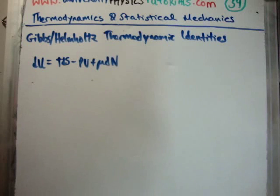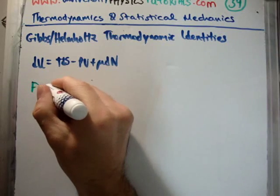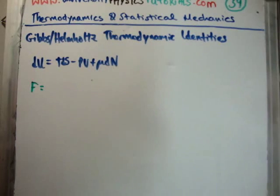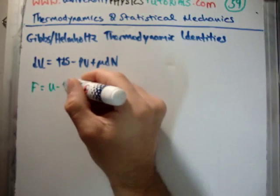Next, we're going to do the thermodynamic identity for the Helmholtz free energy F. Well, the Helmholtz free energy is when you're at constant temperature but not constant pressure. So F is equal to U minus TS.